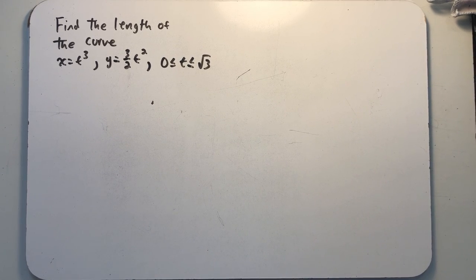Let's find the length of this parametrically defined curve. x is equal to t cubed, y is equal to 3 over 2 t squared, and t is between 0 and the square root of 3.